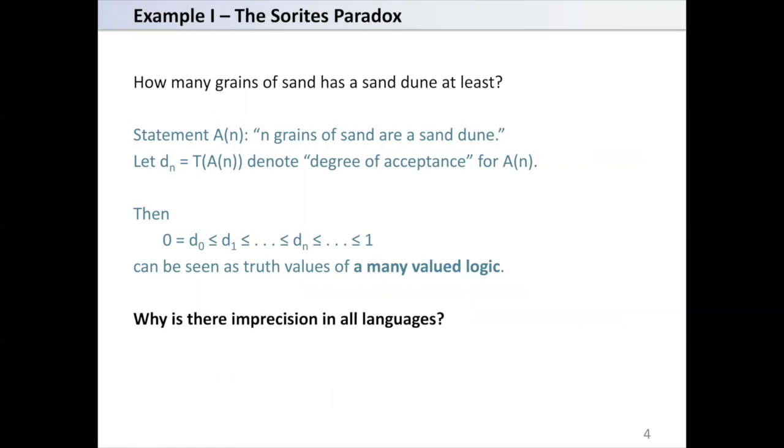How many grains of sand has a sand dune at least? Statement An saying that n grains of sand are a sand dune. Let dn be the function t applied on An, statement An. This is denoting degree of acceptance for An.